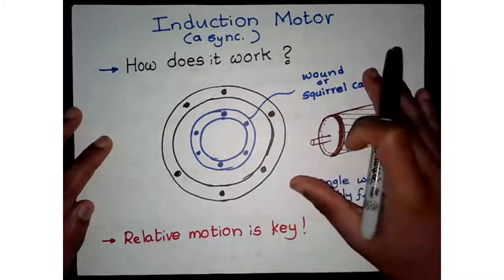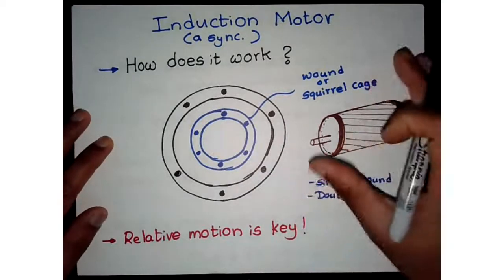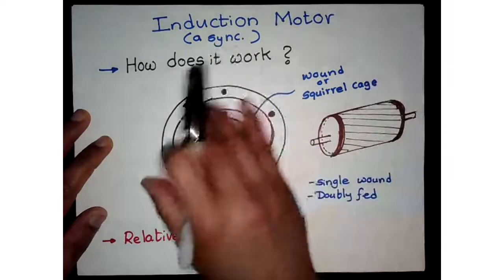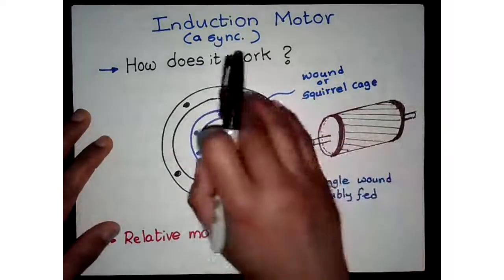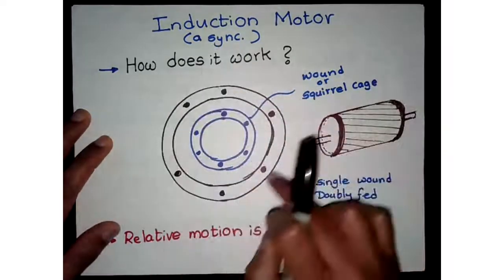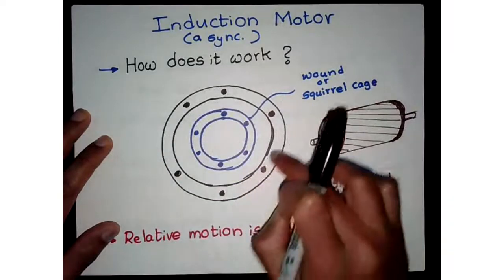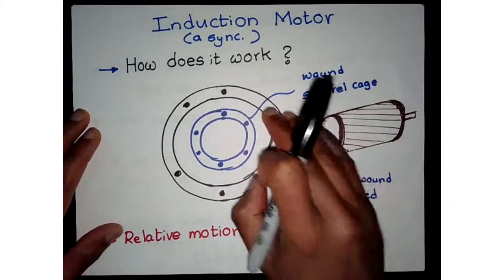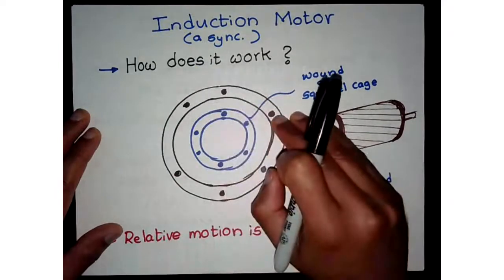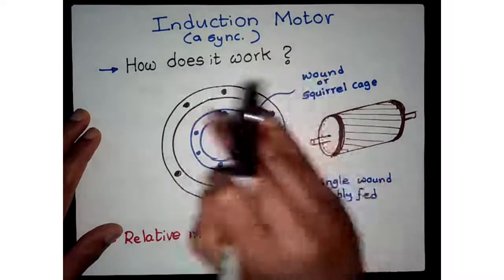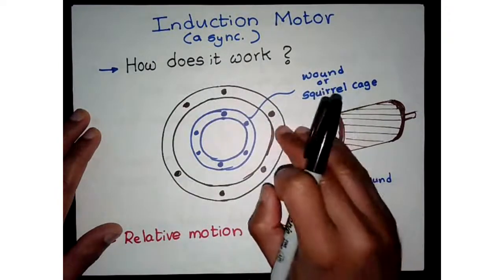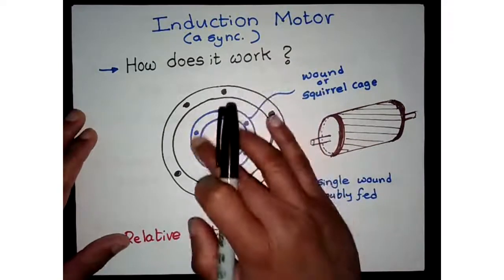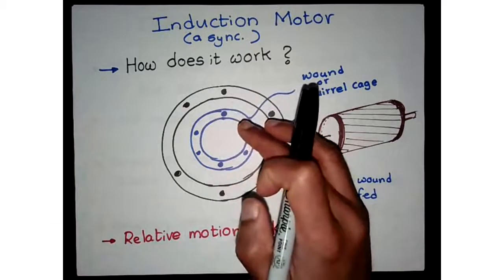Now let's look at the cross-section. We've been looking at cross-sections for a while, so I hope you have a good idea of what it means when I draw this. We are looking at the stator here, and if you remember from the permanent magnet synchronous machine, we had a similar three-phase stator. On the PMSM, the rotor was permanent magnet based.